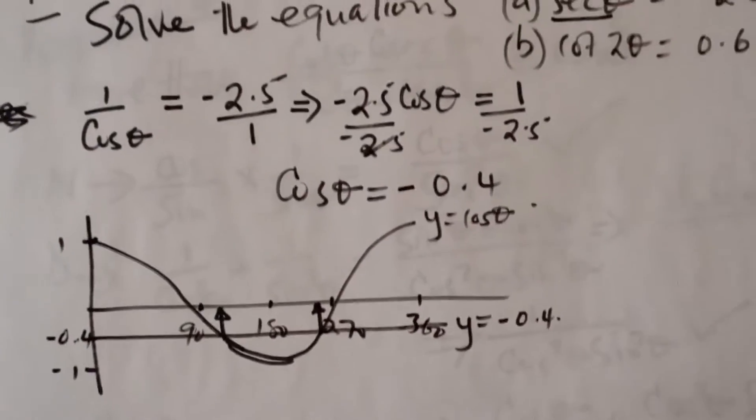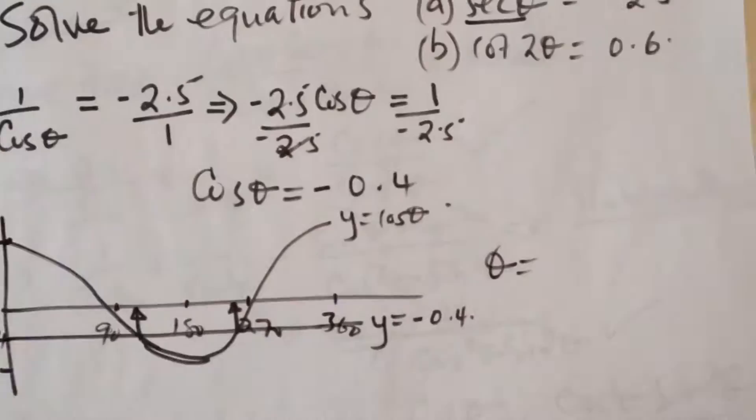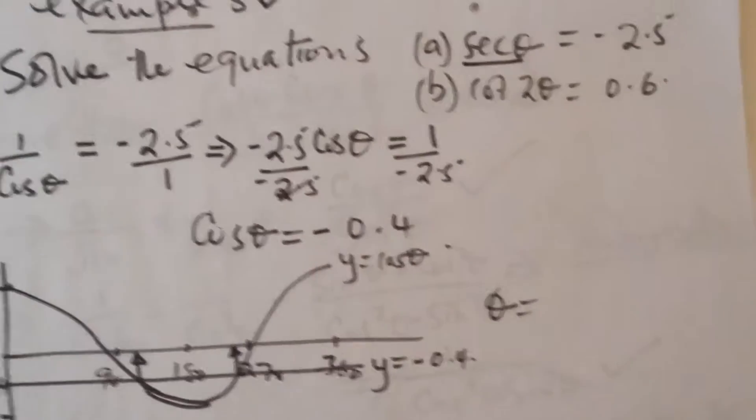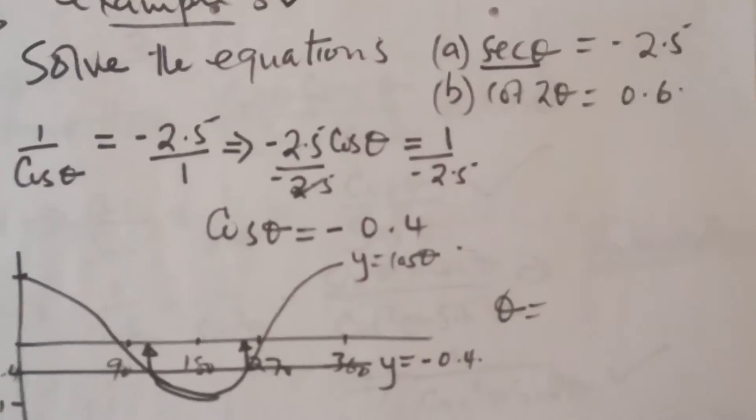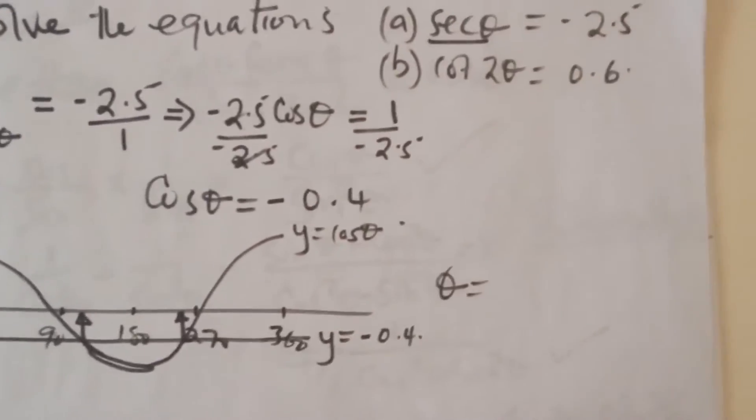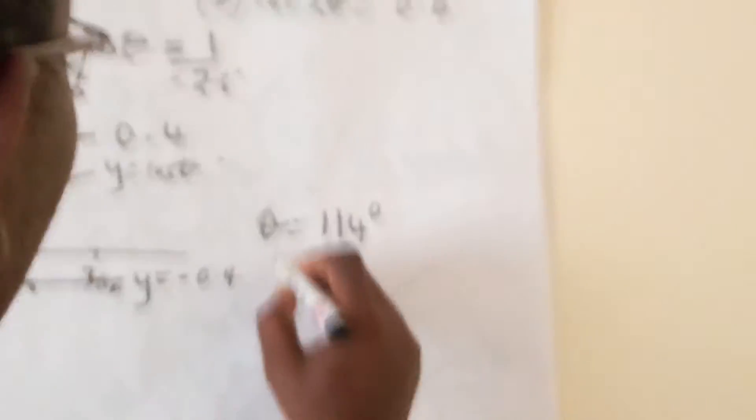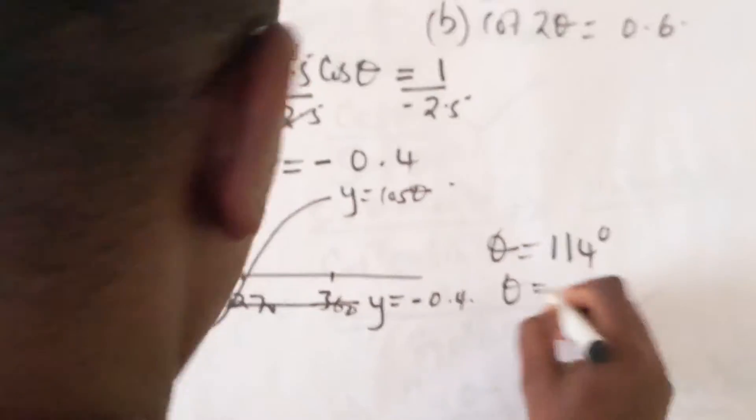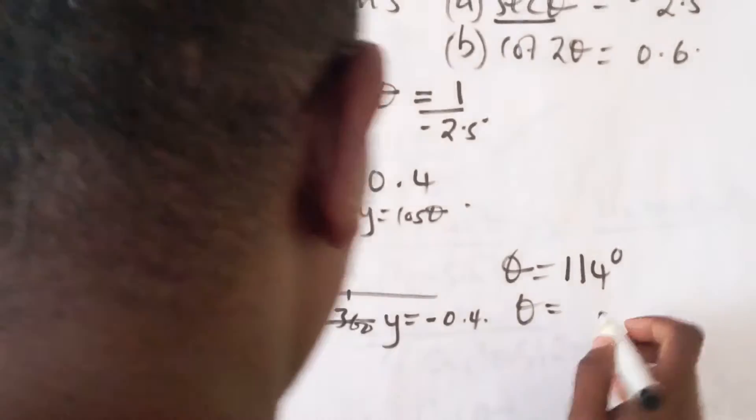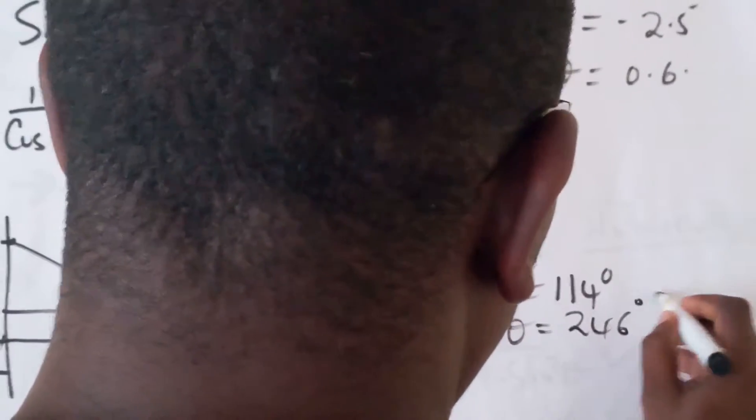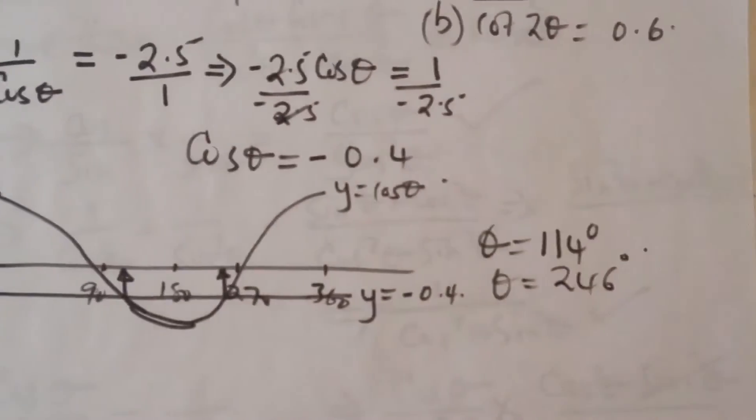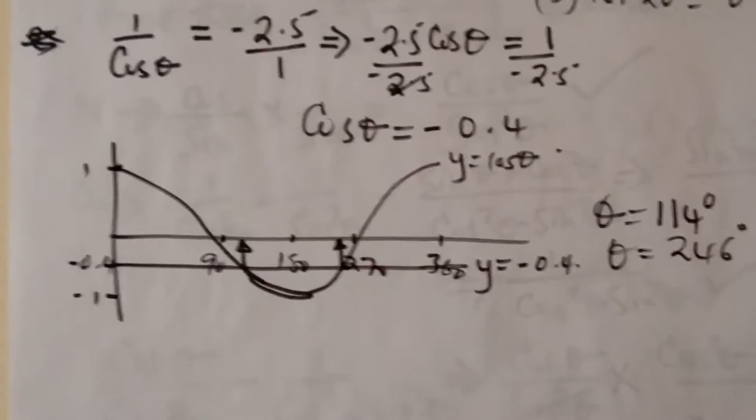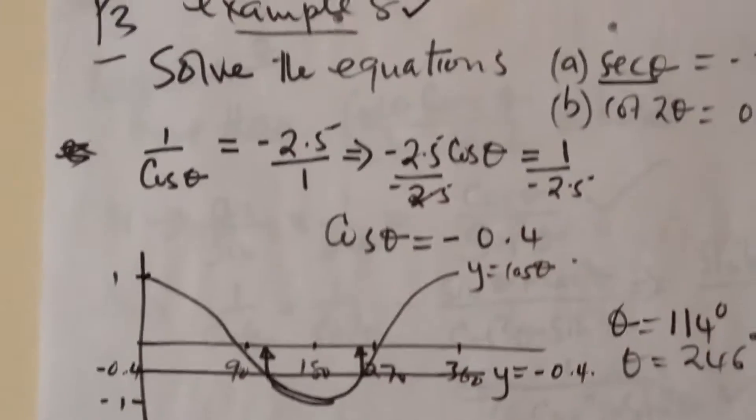We are also told that theta, example 6 tells us accurately, theta is going to be around 114 degrees when it is here, and when it is here, it's around 246 degrees. You can solve it that way. But of course, you can solve it using the unit circle.